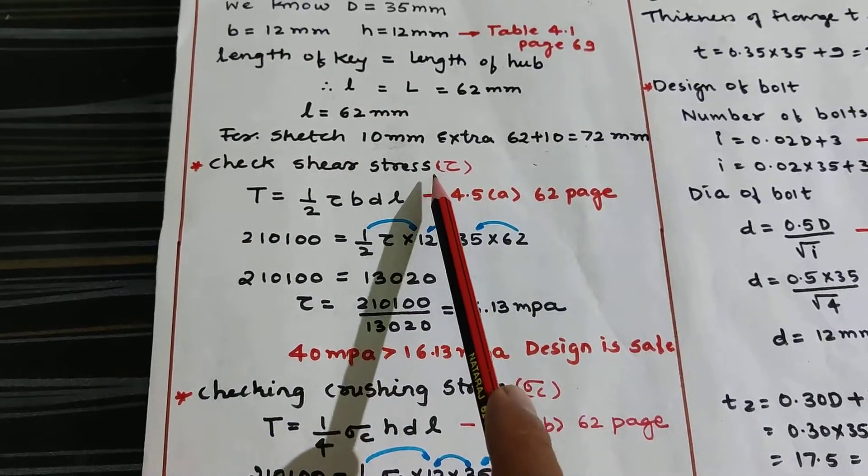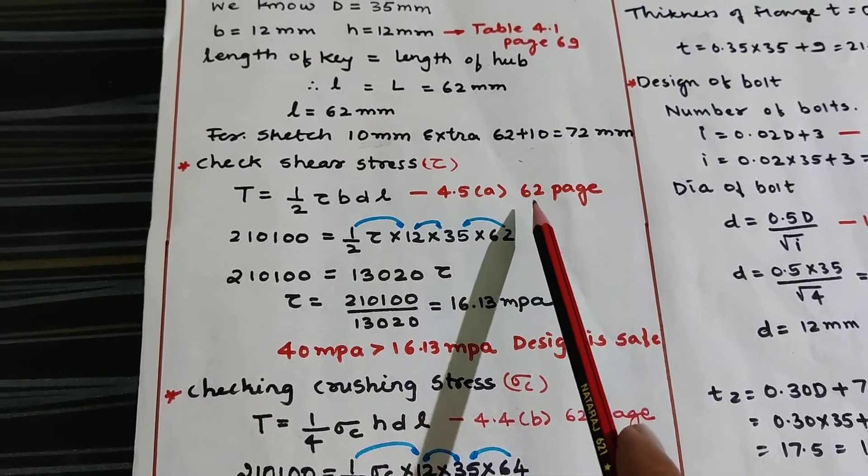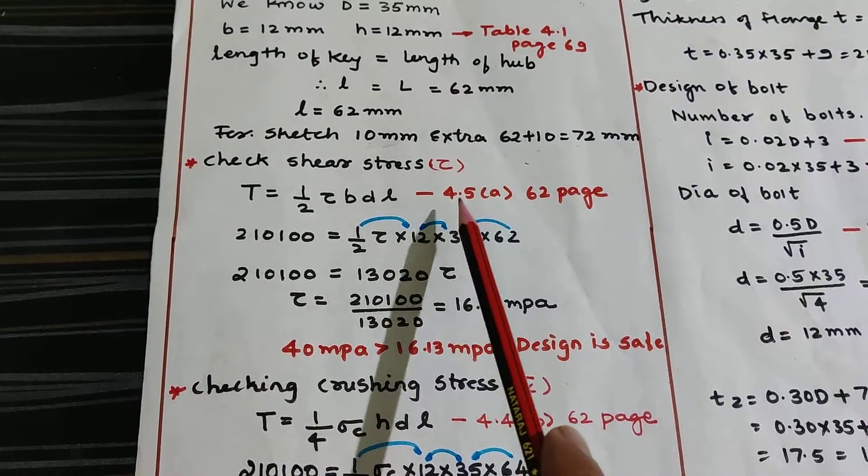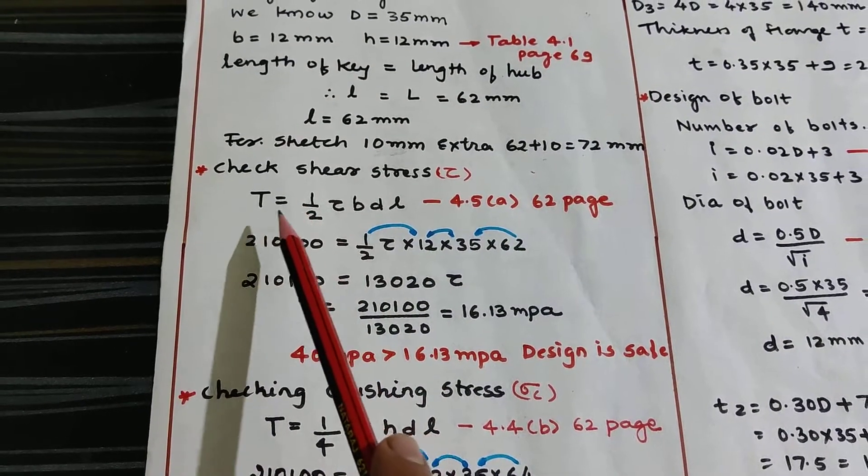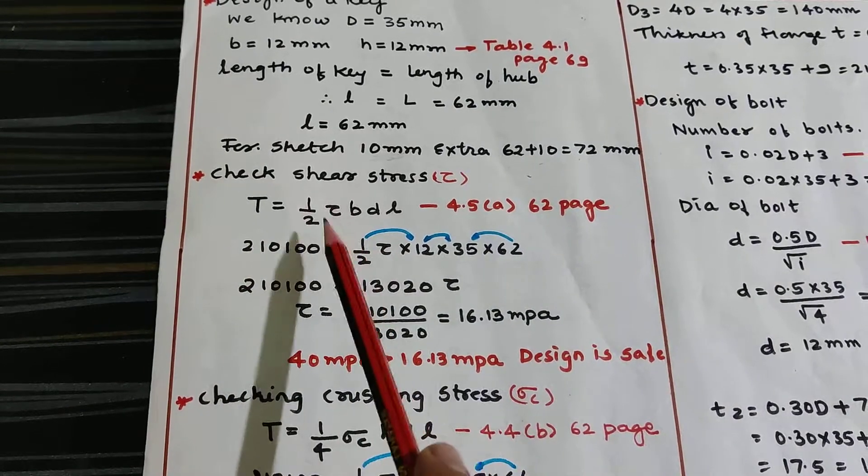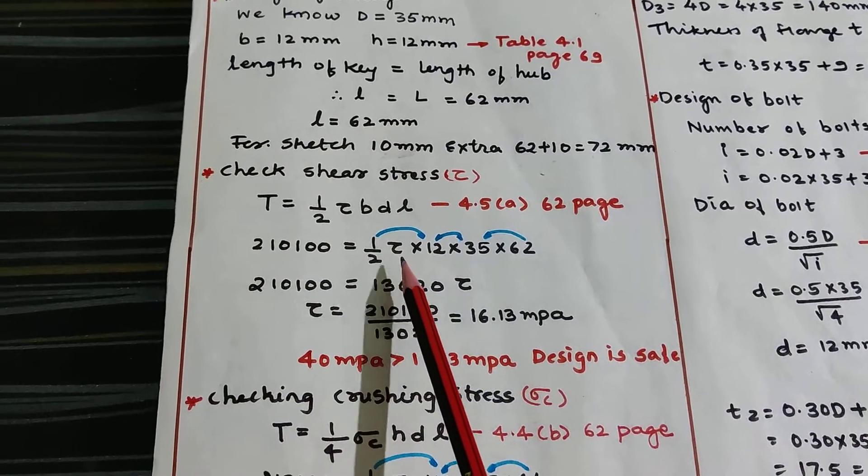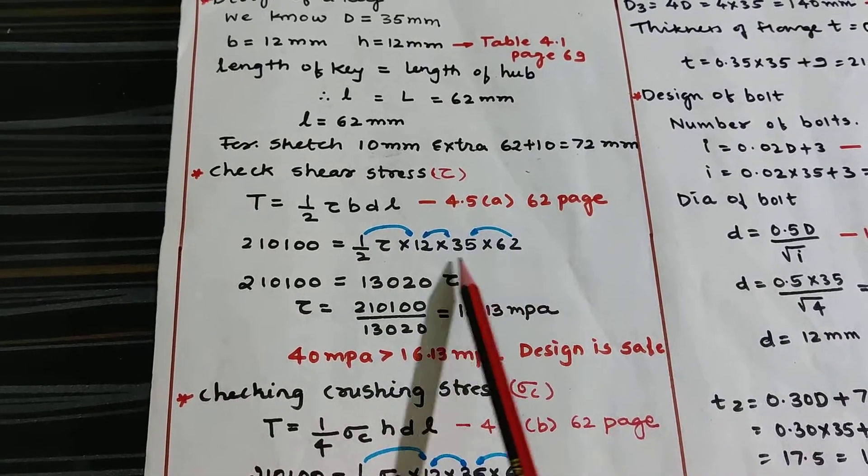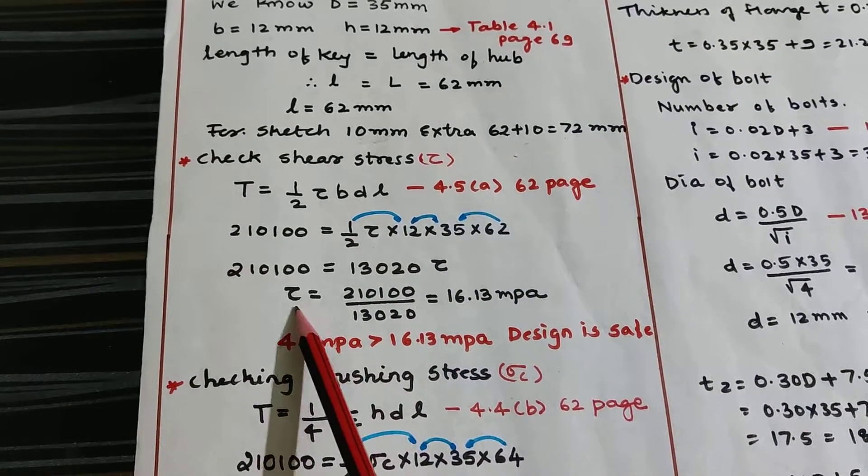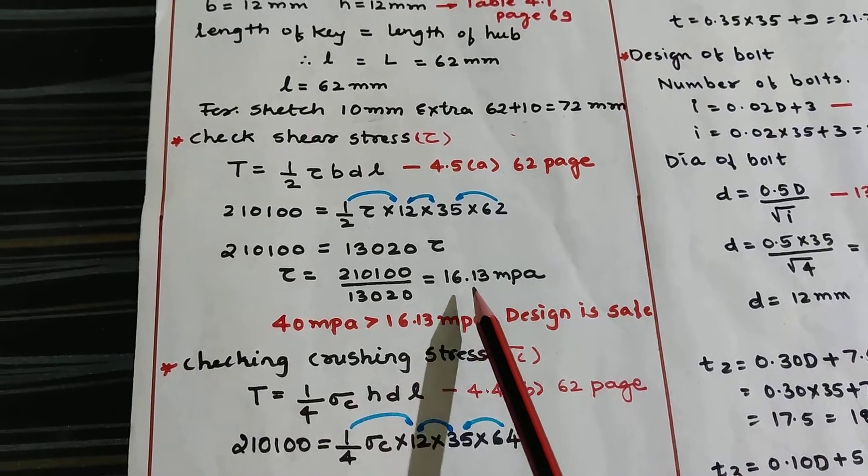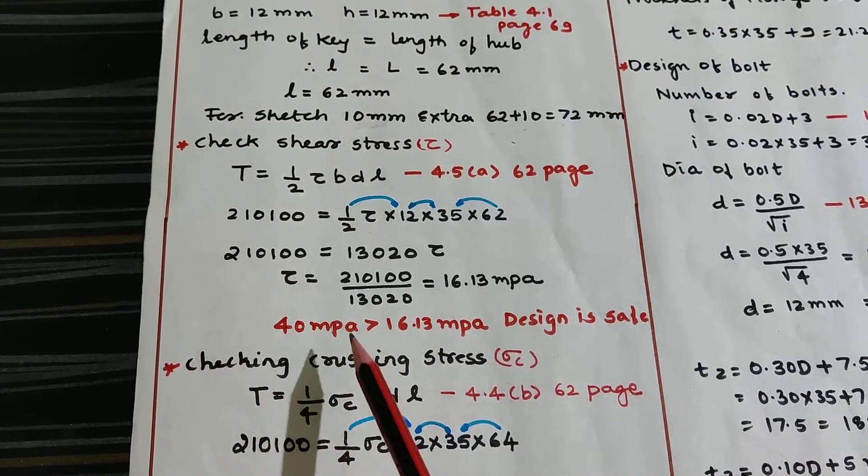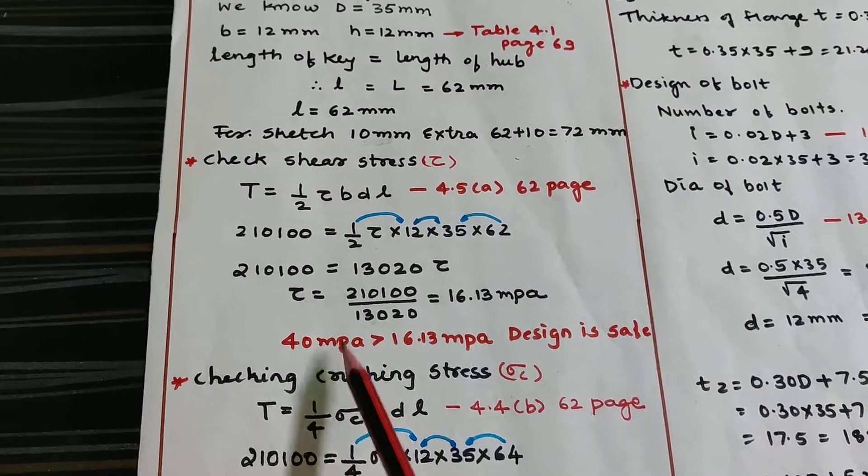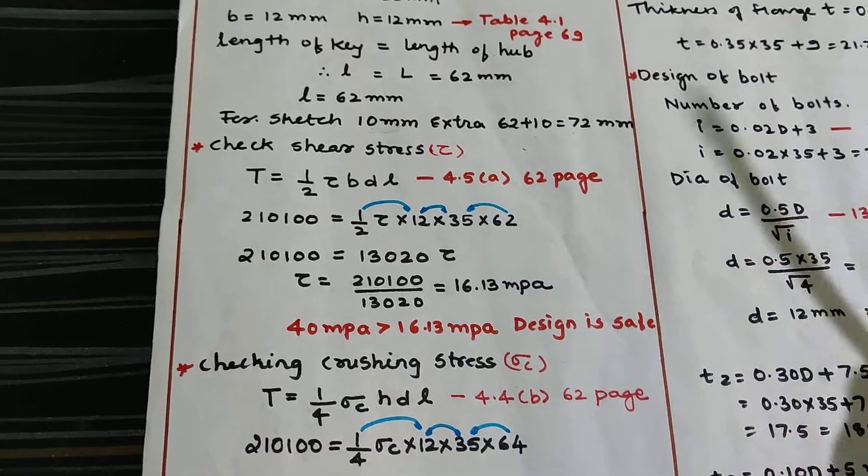Now check the shear stress. For checking, I will use formula on page 62, equation 4.5A which is T = 1/2 τ B D L. Substitute remaining values and find tau. I got 16.13 MPa which is less than 40 MPa given in the problem. So here also my design is safe.